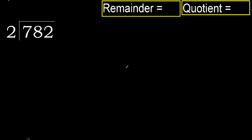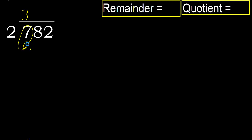782 divided by 2. 7 is not less, therefore work with 7. 2 multiplied by which number is nearest to 7 but not greater? 2 multiplied by 4 is 8 — 8 is greater. Multiply by 3: 6 is not greater. Subtract: 7 minus 6 is 1. Next, bring down.